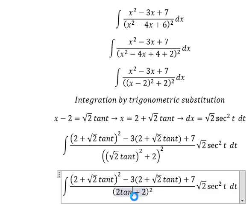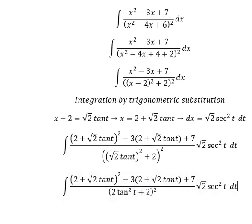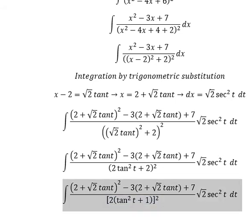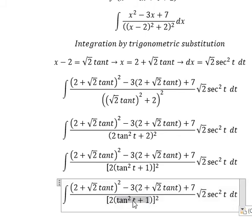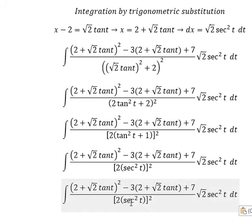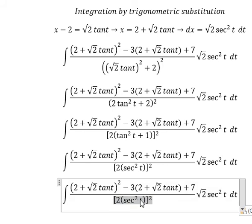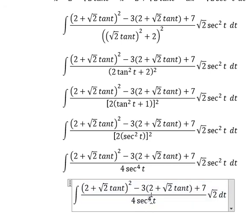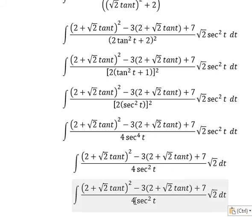This gives us 2·tan²(t). With the factors of 2 combined, we can do factorization. We change this for sec²(t), so we have 2² times sec²(t) squared, which gives us 4·sec⁴(t). Now we simplify by sec²(t). Next I will put the square root of 2 and the 4 outside.